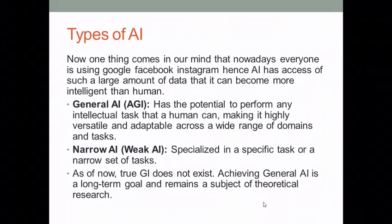This type of question arises in our mind, so we have to get more knowledge on AI. If we take the types or categories of AI, there are two types: General AI and Narrow AI. General AI has the potential to perform any intellectual task that a human can, making it highly versatile and adaptable across a wide range of domains. Narrow AI is specialized in a specific task or a narrow set of tasks.